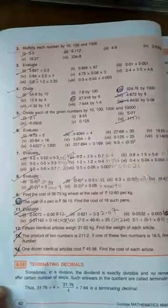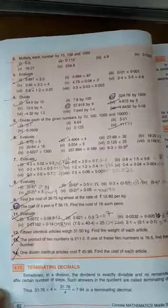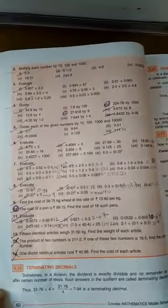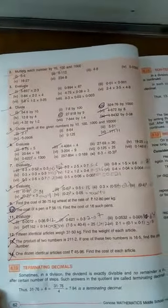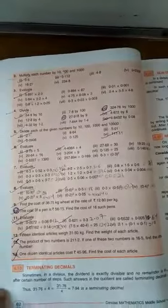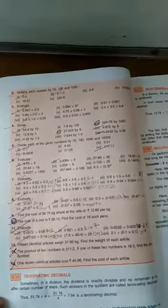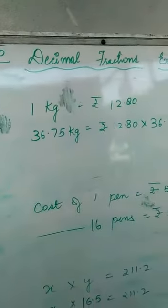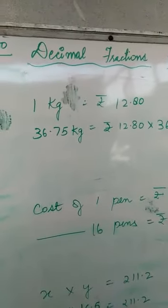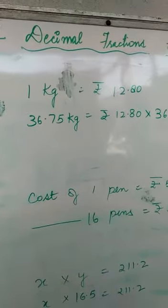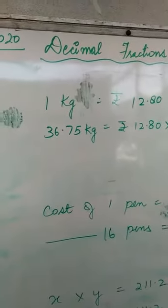Okay, now let's do some word problems. Question number nine: find the cost of 36.75 kg wheat at the rate of 12.80 per kg. Per kg means 1 kg, so the rate is given. 1 kg wheat is rupees 12.80.